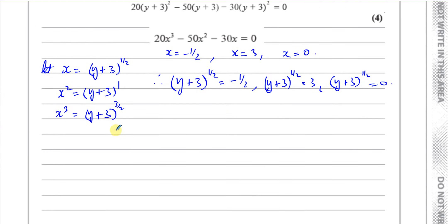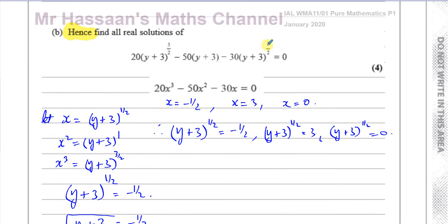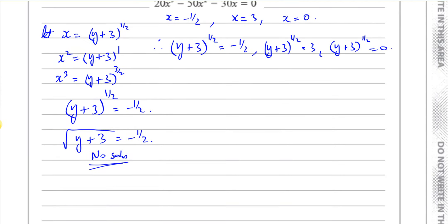For (y+3)^(1/2) = −1/2: this means the positive square root of (y+3) equals −1/2. The positive square root of something cannot be negative, so there is no solution to this equation. You can't just square both sides and ignore that — (y+3)^(1/2) means the positive square root, so there's no solution here.